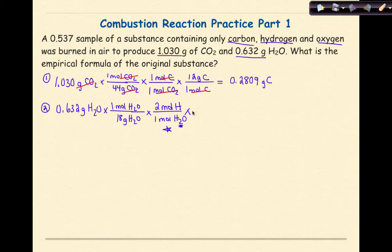Finally, my last step is to say, well in one mole of hydrogen I'm going to have one gram of hydrogen. Again, just the atomic mass. We check our units. Grams of water cancels grams of water. Moles of water cancels moles of water. Moles of hydrogen cancels moles of hydrogen. And then finally, I find that my answer here is going to be 0.0702 grams of hydrogen.